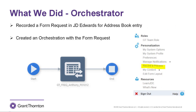So how did I accomplish meeting those requirements? To begin the process of automating the data entry, I recorded a form request in JD Edwards that enters the required data into the address book. It's pretty straightforward to record a process — just click on your name in the top right corner of JD Edwards, and under the personalization section, click 'record a process.' Once you start recording, it will record every click and every piece of data you enter. So beware of that, because once you've completed the recording, you should go into Orchestrator Studio and clean it up to remove any extra button clicks or erroneous data.